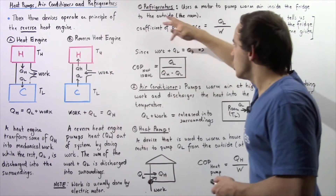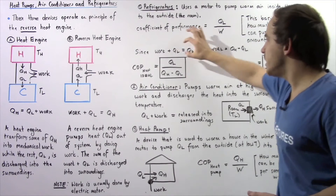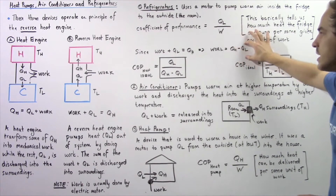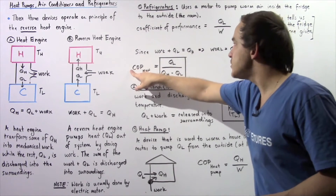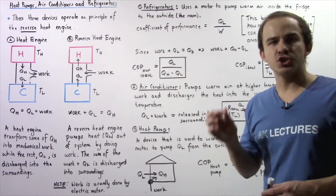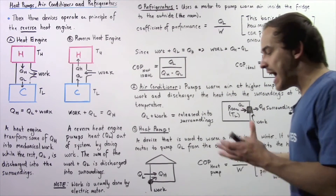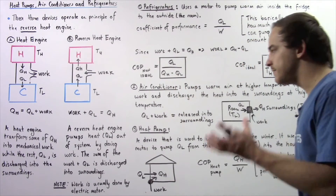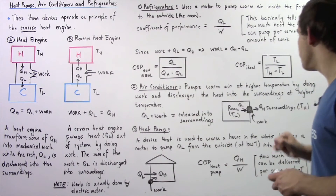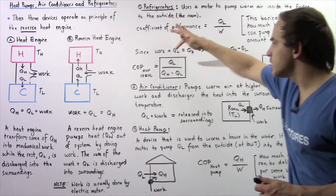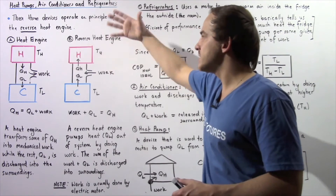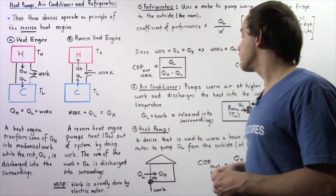Recall that W + QL = QH, so we can rearrange to get W = QH − QL. Substituting, the coefficient of performance for a non-ideal system is equal to QL divided by (QH − QL), where QL is how much heat is pumped out of the system and QH is the total heat discharged into the surroundings. For an ideal system, we simply replace QL with the temperature TL and QH with the temperature TH, giving COP = TL / (TH − TL). This equation only works for an ideal system.